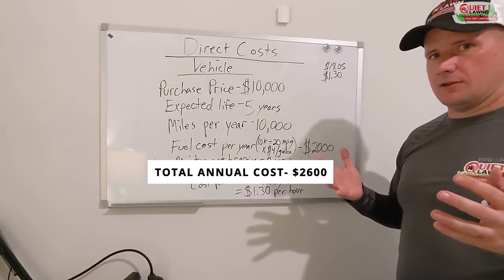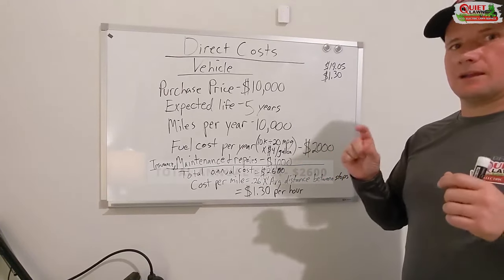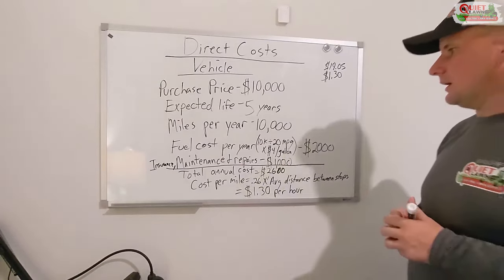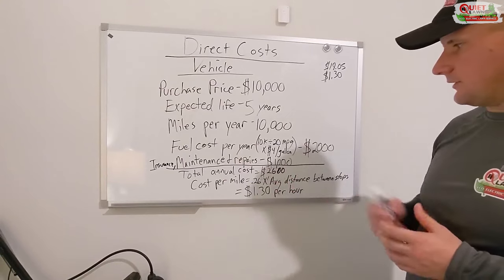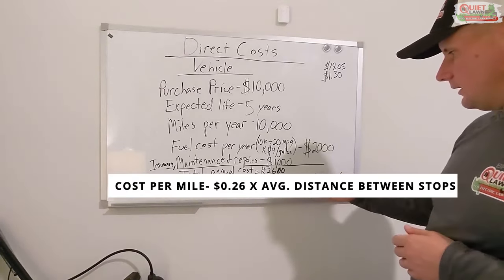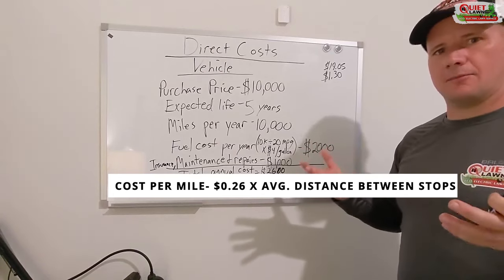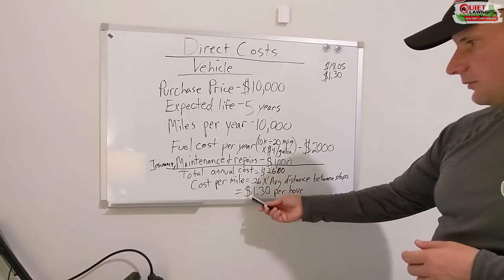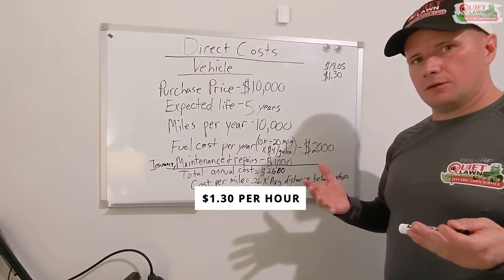Now I need to figure out a way to divide this $2,600 out over the amount of hours I'm going to use this vehicle so I can arrive at what number I need to enter for that hourly charge to recoup my cost to replace this vehicle. A simple way to do that is to break it down to cost per mile. If we divide $2,600 by 10,000 miles, it arrives at 26 cents per mile. Now if we multiply that by the average distance between our stops — let's say your average customers are five miles apart — 26 cents times five miles arrives at a cost of $1.30 per hour.